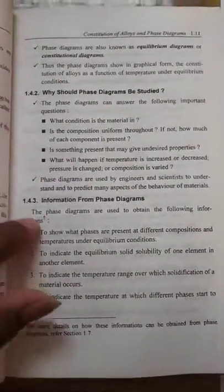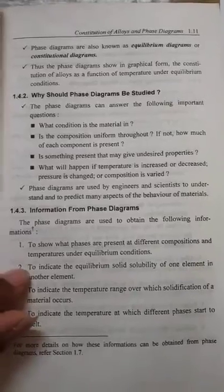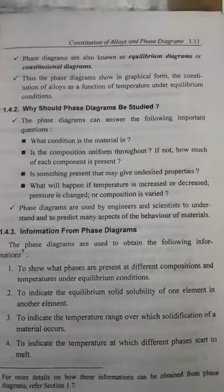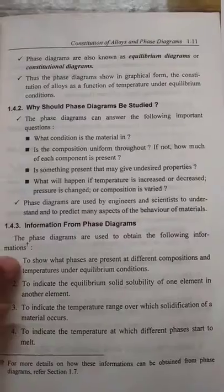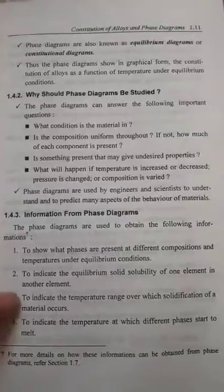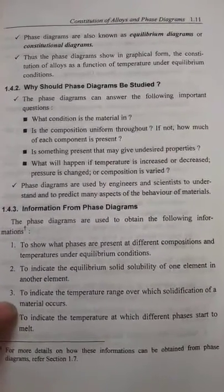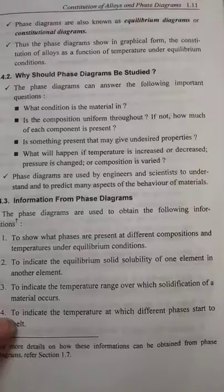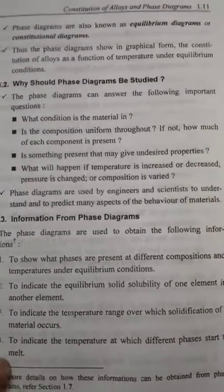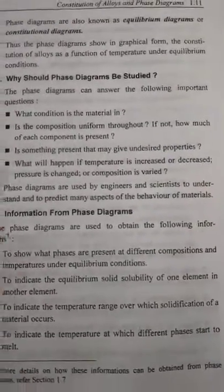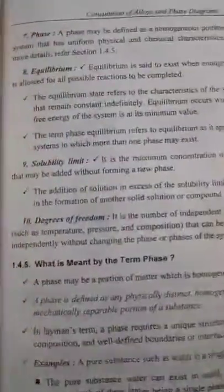The information obtainable from a phase diagram includes: what phases are present at different compositions and temperatures under equilibrium conditions; the equilibrium solubility of one element in another, indicating how much of one element will dissolve in the other; what phases are present at different compositions; the temperature range over which solidification of a material takes place; and the temperature at which different phases start to melt.